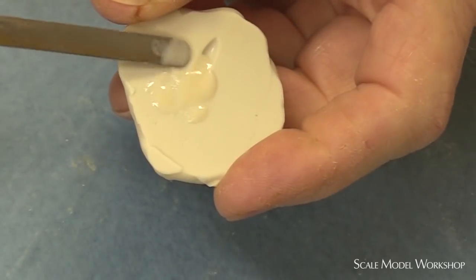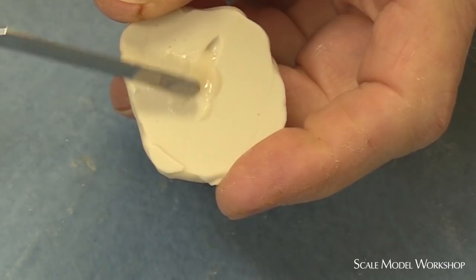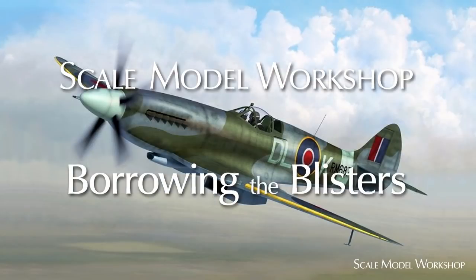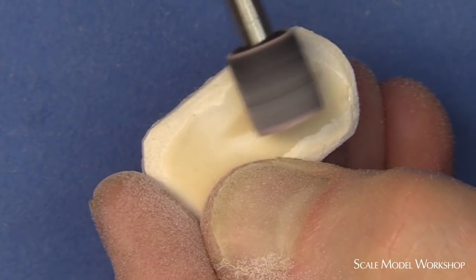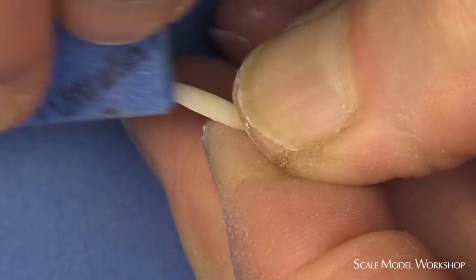In the last video, I used a mold and resin to copy blister detail for my Spitfire 14 conversion. This worked out well because there was sufficient bulk of material and the blister was large enough to handle during fabrication.